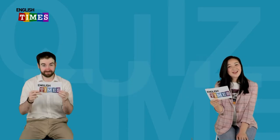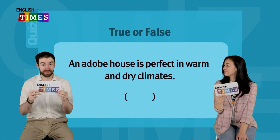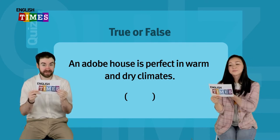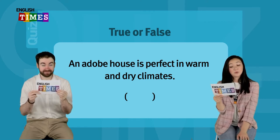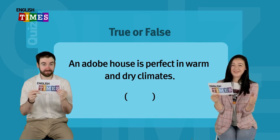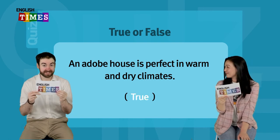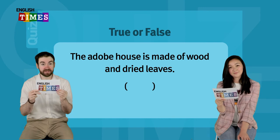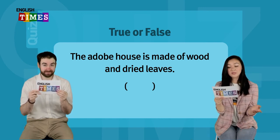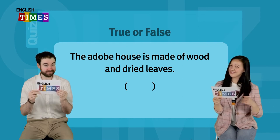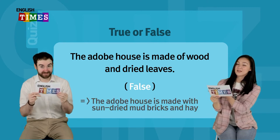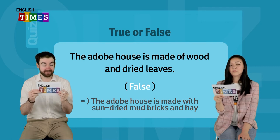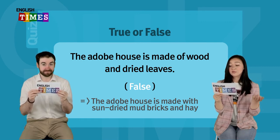네, 여러분, 우리 이제 퀴즈 타임을 할 거예요. The quiz today is true or false? 첫 질문! An adobe house is perfect in warm and dry climates. Adobe house는 건조하고 따뜻한 기후에 최고의 집이래요. 진짤까요, 거짓실까요? The answer is true. 맞았습니다. Next question: The adobe house is made of wood and dried leaves. Adobe house는 나무와 마른 잎으로 만들어졌대요. The answer is false. Because it's made with sun-dried mud bricks and hay. 마른 진흙과 건초로 만들어졌죠.